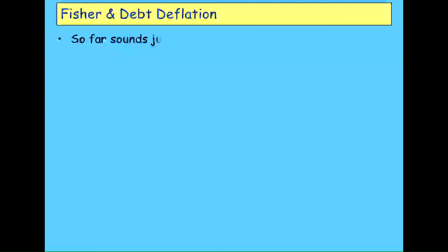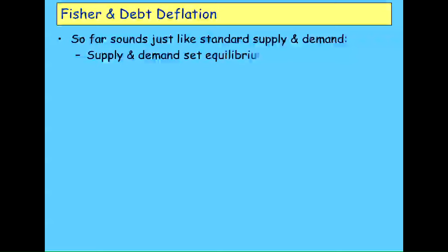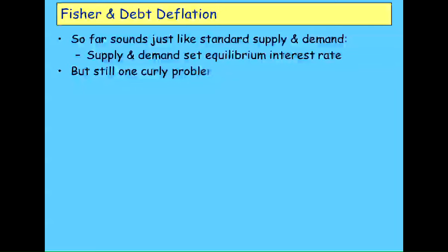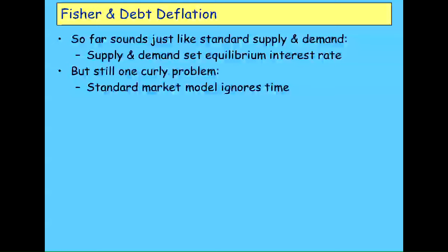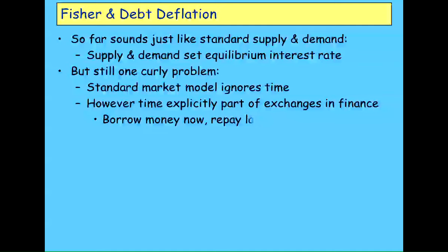It's just like the standard supply and demand argument so far, but even having done that and shoehorned an inversion of the causal factors into the same old model, there are still a couple of things you can't get away from. To get that equilibrium interest rate, you still can't avoid time. The usual market of supply and demand abstracts from time completely, but time is explicitly part of an exchange in finance — you're borrowing money now and promising to repay it later, plus pay interest over time. So you can't avoid the time dimension.